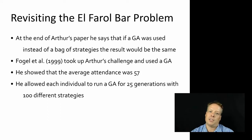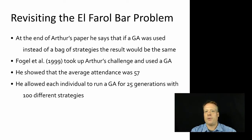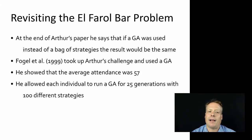Without going into too much detail about how a genetic algorithm works — there are other courses on the Complexity Explorer website that cover that — a genetic algorithm is essentially a machine learning algorithm that uses evolutionary principles to optimize or find the optimal space of solutions for a problem. Fogel and colleagues in 1999 actually took up Arthur's challenge and built an El Farol bar problem model that used the GA to optimize the strategy.